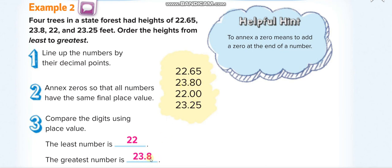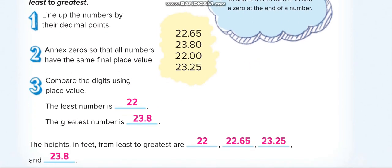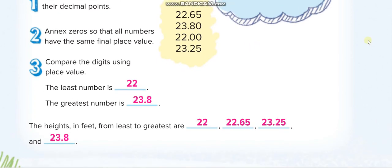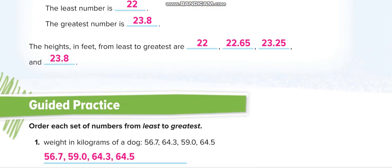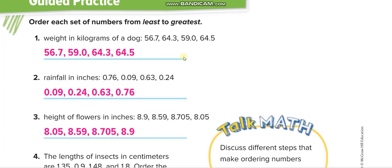So 22.0 is the least, then 22.65, then 23.25, and 23.80 is the greatest. When you order from least to greatest: 22, 22.65, 23.25, and 23.8. Remember, you can add zeros — for example, 23.8 and 23.80 are the same. This lesson is very simple.